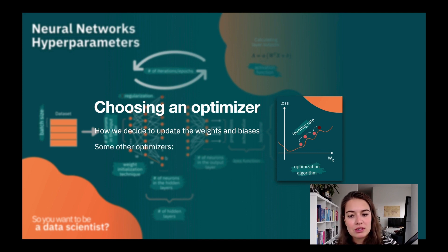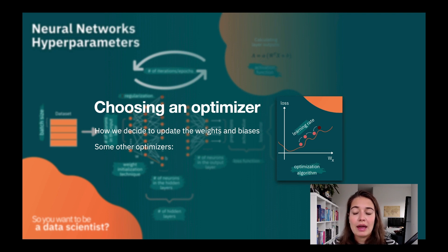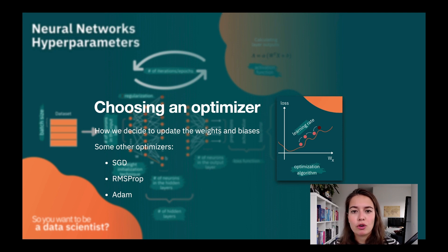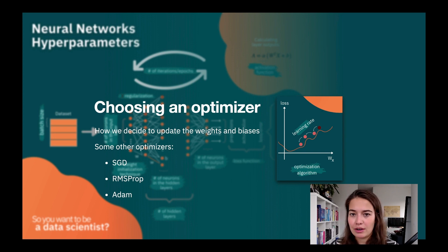The optimizer we used in the exercise was gradient descent. That's essentially what most people use, but there are others. SGD is the gradient descent one. There's also a better one called RMSprop, or Adam, among others. We'll discuss which one to choose under what conditions in coming lessons, as there are a lot of details.